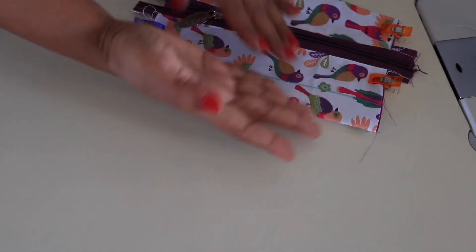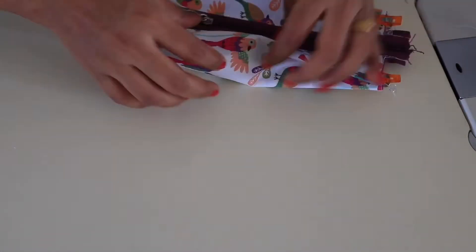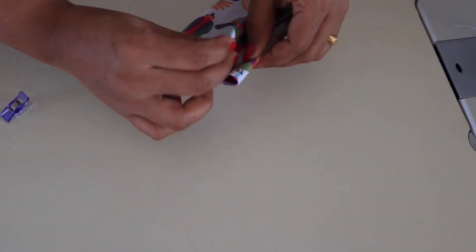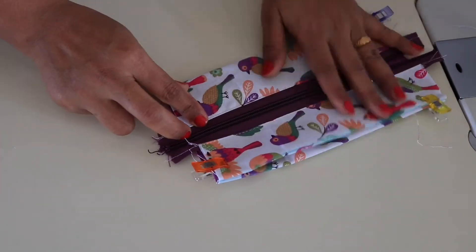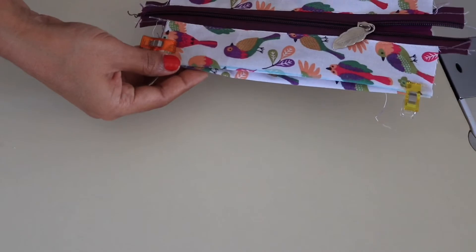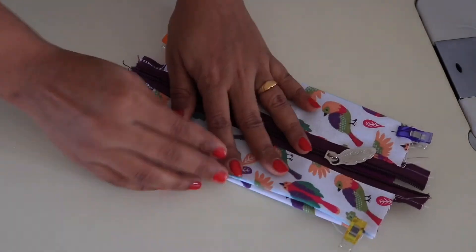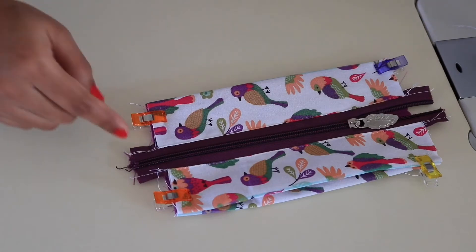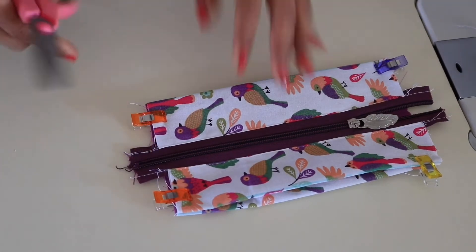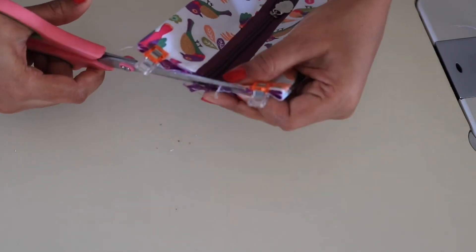Do the same for the other side also. So it will look like this. Both the sides are clipped. Cut the extra zippers from both the sides. Make sure to bring the zipper pull in the center before cutting.